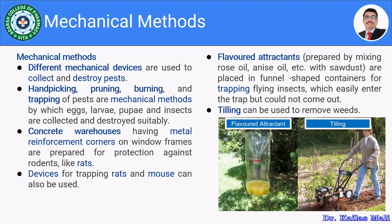The last one is tilling — a kind of mechanical device used to remove weeds from the farm. Weeds are a kind of pest; more than 50% of damage comes from weeds. The flavored attractant uses a funnel-like apparatus where some kind of flavor is stored, and automatically the insects or pests are attracted towards the specific smell and get trapped into the device.